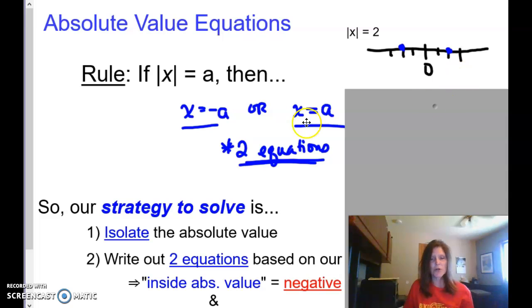So in general, if I have the absolute value of x is equal to some value a, I'm going to say x is either equal to the negative of that or it's equal to the positive. I'm going to get two options.